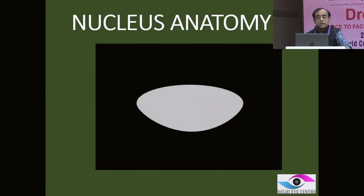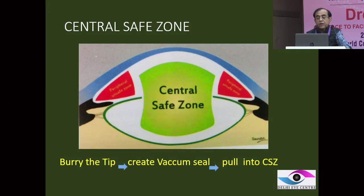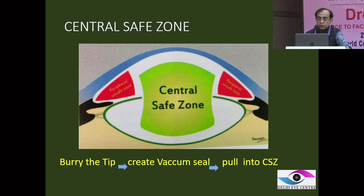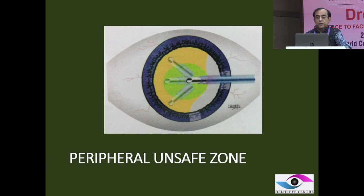Nucleus anatomy: as the nucleus keeps on becoming harder, it keeps on becoming concave backwards. So if you make a horizontal trench, the hardest part of the nucleus will not be able to break. You have to make a trench according to the shape of the nucleus. All aspiration and chopping should be performed in the central safe zone — bury the nucleus, lollipop it, chop it, then bring it to the center where maximum space is available. No procedure should be done in the peripheral unsafe zone, closer to the iris or the posterior capsule.